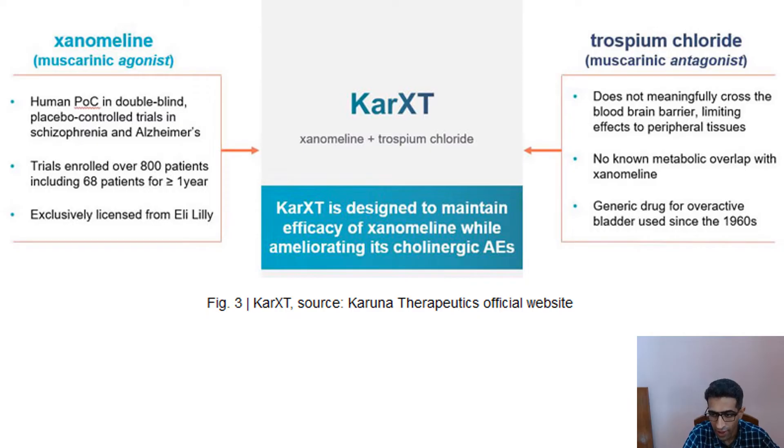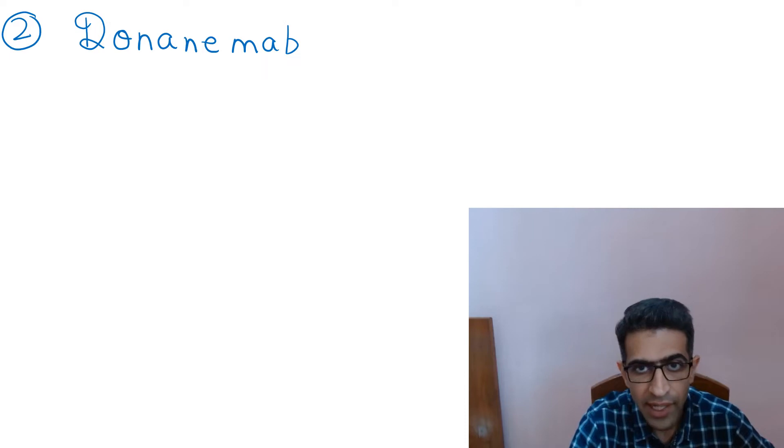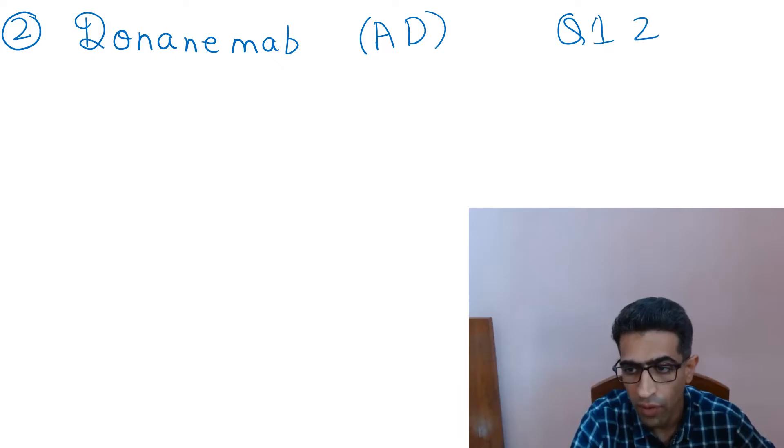The second drug is donanemab. Indication is Alzheimer's disease. FDA review results expected in first quarter of 2024. It is a humanized antibody.